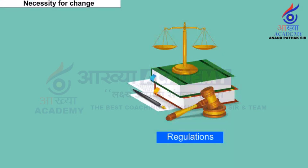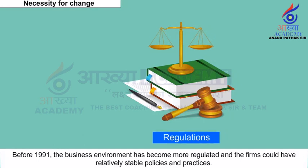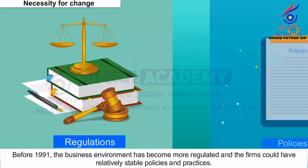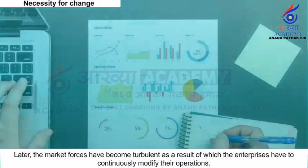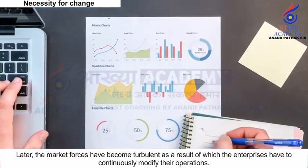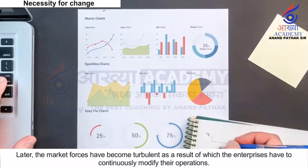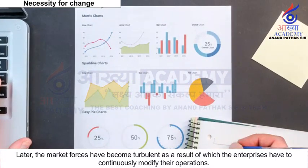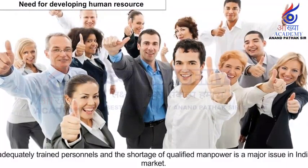Necessity for Change: Before 1991, the business environment was more regulated and firms could have relatively stable policies and practices. Later, market forces became turbulent, as a result of which enterprises have to continuously modify their operations.